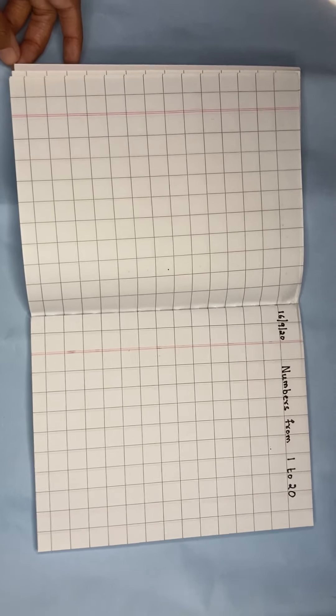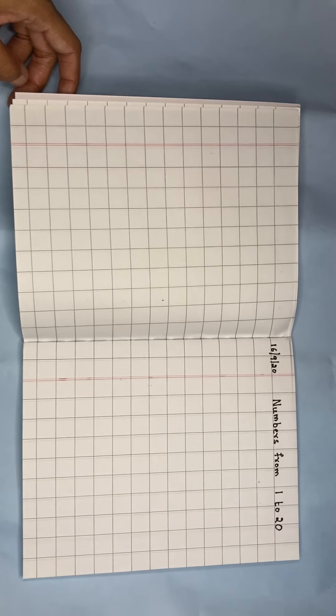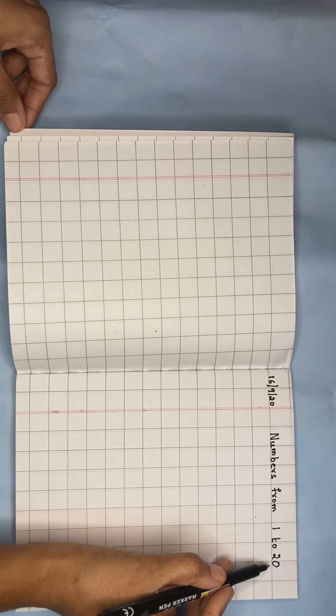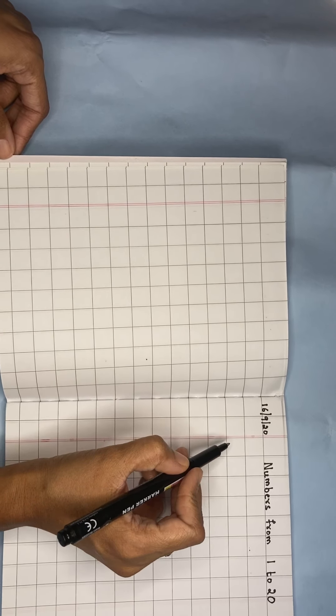Good morning students, hope you all are safe at home. Today we shall learn how to write numbers from 1 to 20 in a square line book.